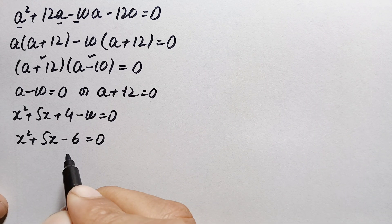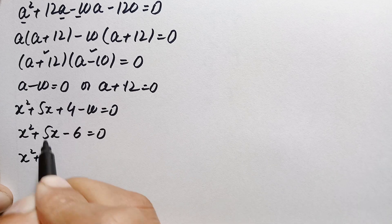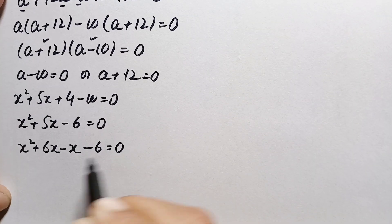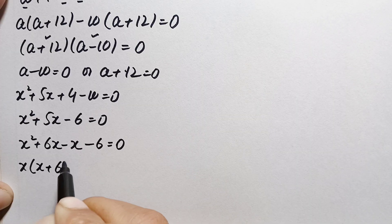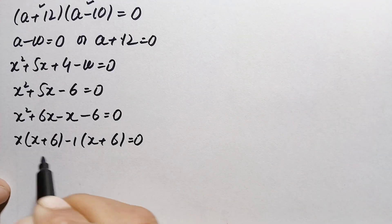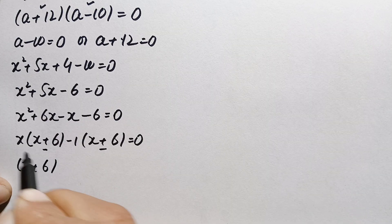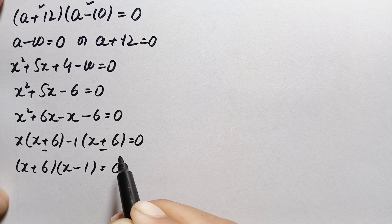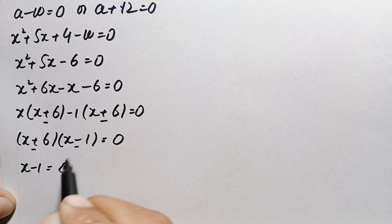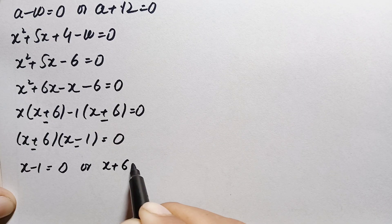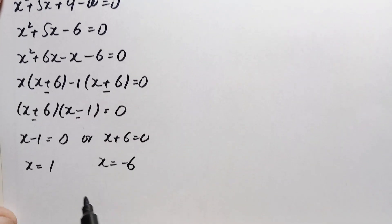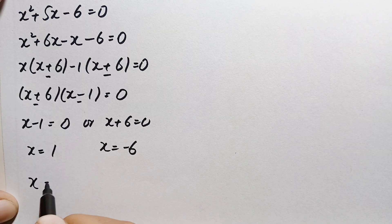We solve x²+5x−6 = 0 by factorization, rewriting as x²+6x−x−6 = 0. Factoring: x(x+6)−1(x+6) = 0, so (x−1)(x+6) = 0. This gives x = 1 or x = −6. These are two real values of x.